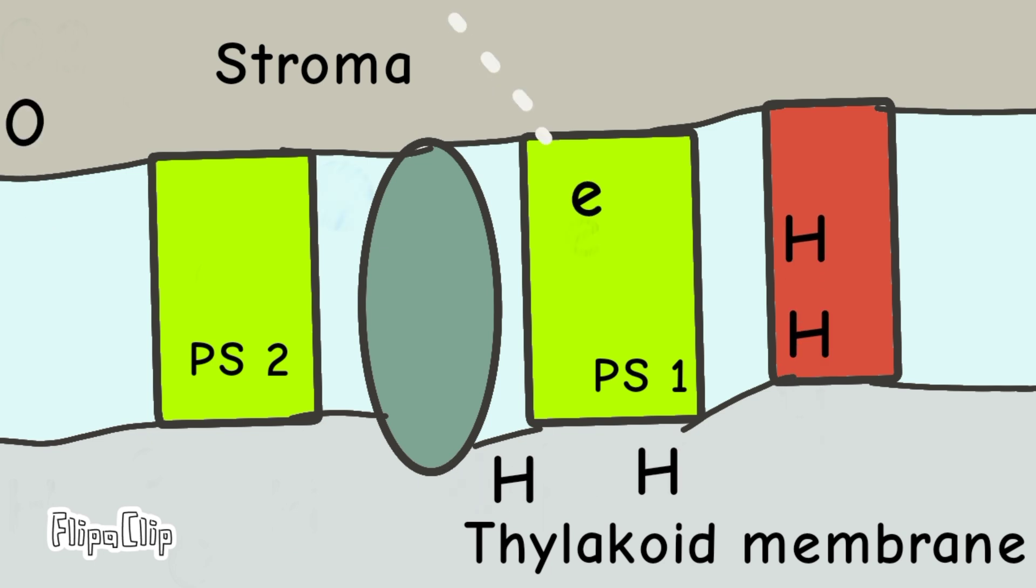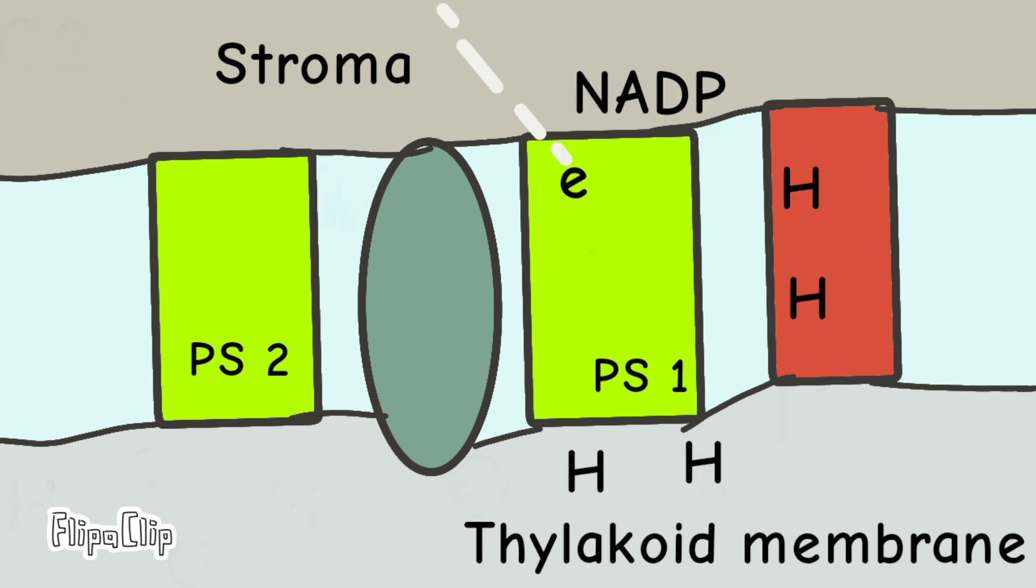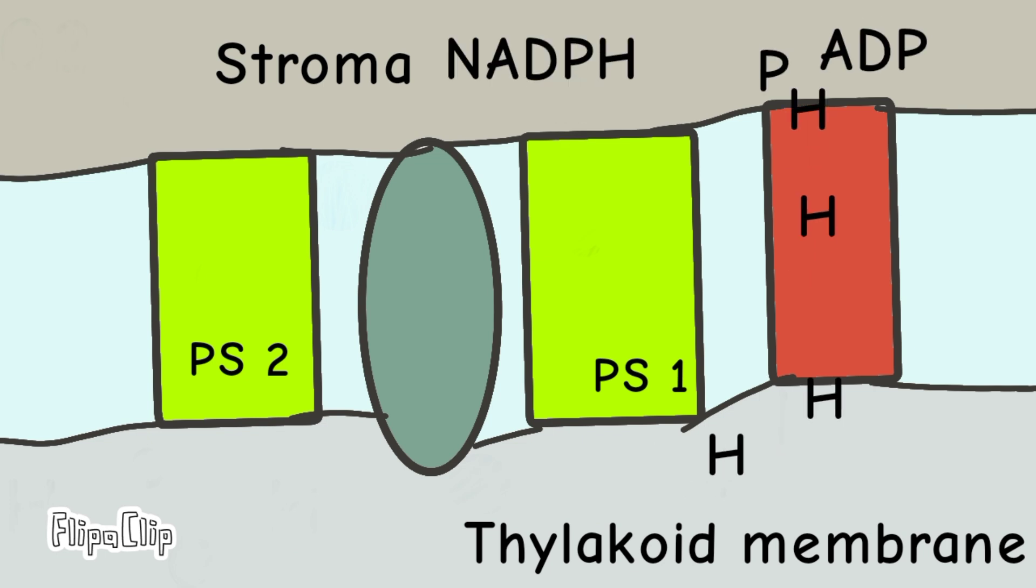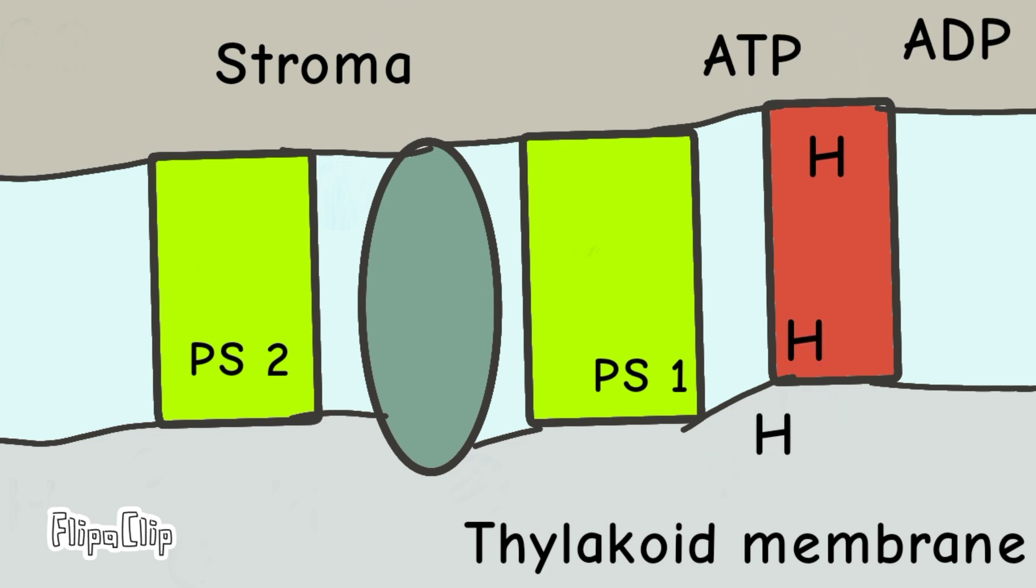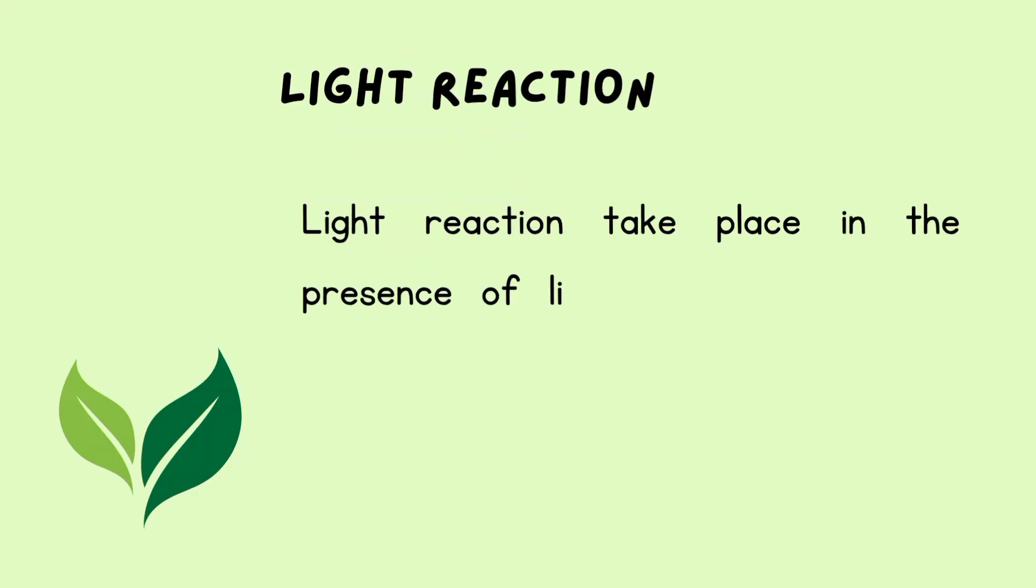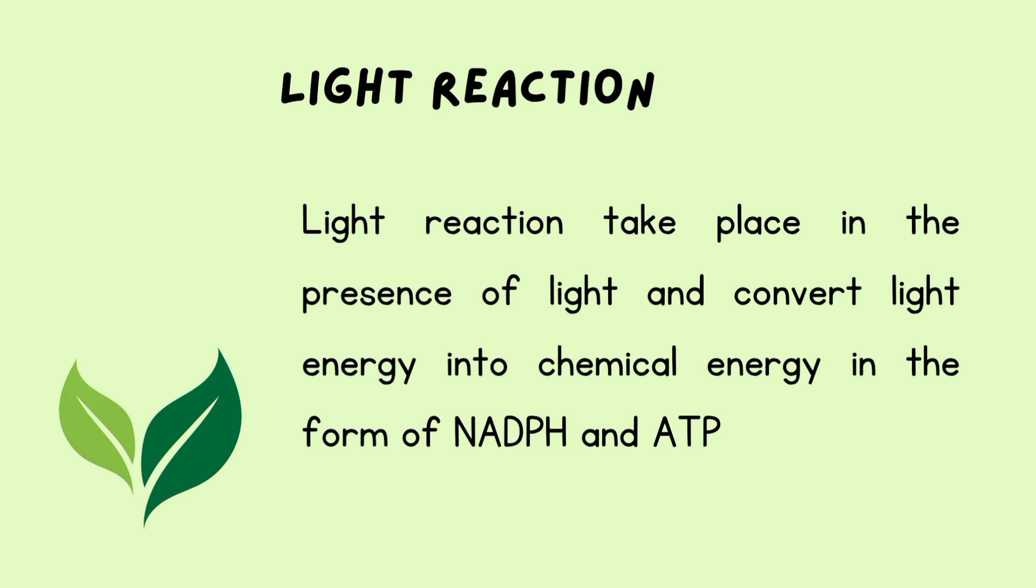In photosystem I, the sunlight re-energizes the electrons, which are used to reduce the NADP to NADPH. Some protons are also used in making ATP. What I have explained so far is a part of a light-dependent reaction, and is called light reaction.